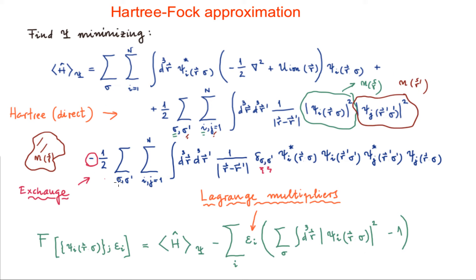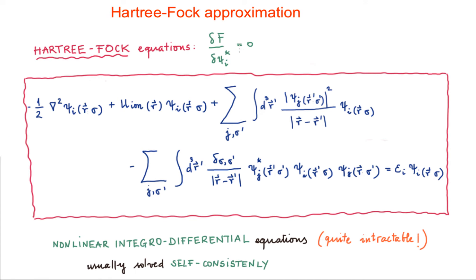Now, we have this expression for the average Hamiltonian. We are going to apply the Lagrange multipliers method. As we did for the Hartree approximation, we define a function which is basically the average Hamiltonian plus a contribution from the sum over the Lagrange multipliers and the constraints, in order to ensure that each electronic wave function is normalized. Once we have that, we then look for the Hartree-Fock equations — the equations that make this function stationary.